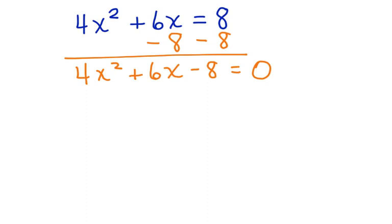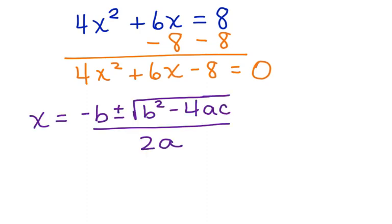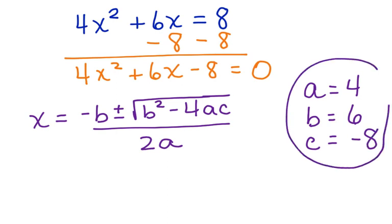Here's the quadratic formula once again. Now, the values for a from our equation is 4. That's the value for a. The value for b is 6, and the value for c is negative 8. We're going to substitute all of these values into the quadratic formula and solve for x.